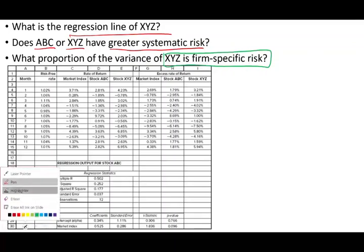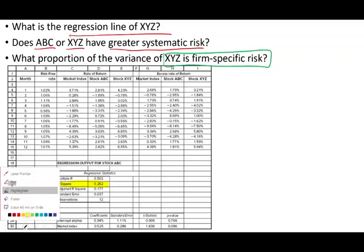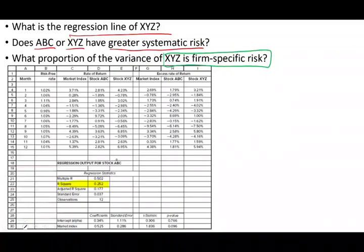So let's first examine the R square for ABC company. The R square for ABC company is 0.25. What does it mean it's 0.25? If it's 0.25, it means approximately 0.75 is firm specific.